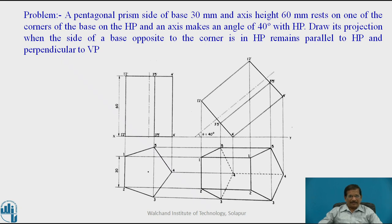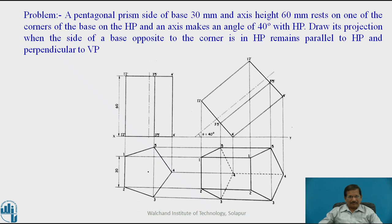While drawing the pentagon, you have to take care whether the corner will be towards the right-hand side or towards the left-hand side. In this case, as one of its sides is parallel, we will be drawing the corner towards the right-hand side such that the line drawn from the corner perpendicular to the base side will be parallel to the XY line. While drawing the top view, the corner of the pentagon must be towards your right-hand side.